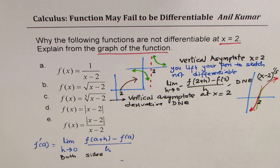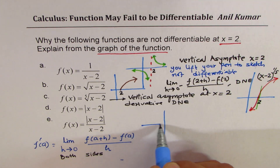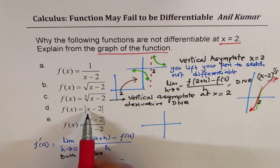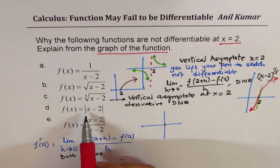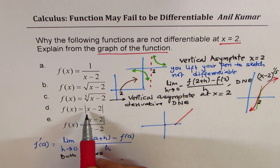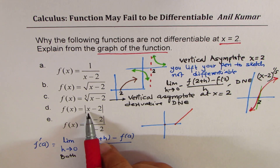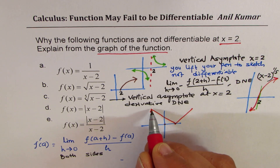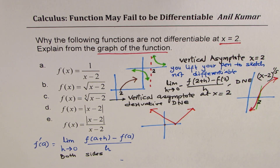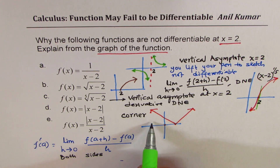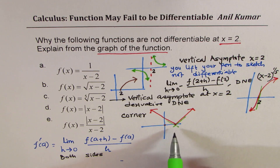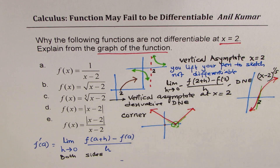Now let's take the absolute value function. If you sketch the absolute value function, at x equals to 2, the value is 0. As the value is more than 2, it is positive. But if x is less than 2, the absolute value is still always positive. So you get a function which is kind of like this — a V-shape. What you see here is that we have a corner. From the left side the slope is negative; from the right side it is positive. So we don't know what the slope is at 2. There is a corner at x equals to 2, and the function's derivative does not exist.